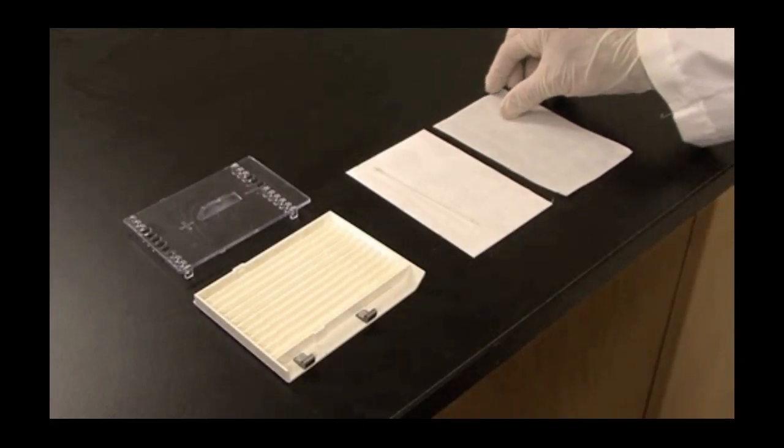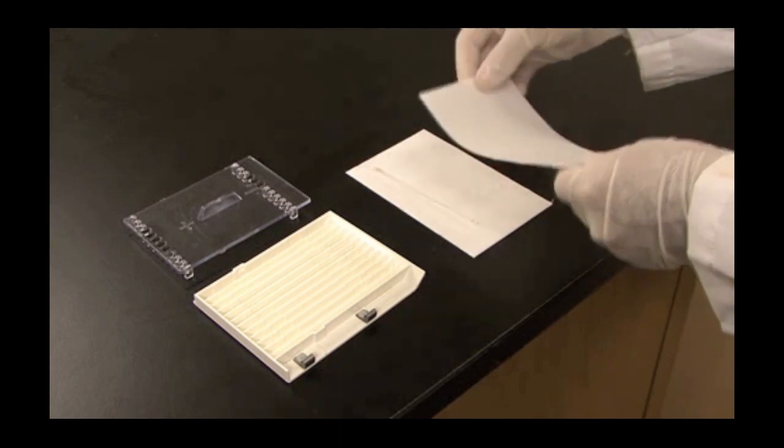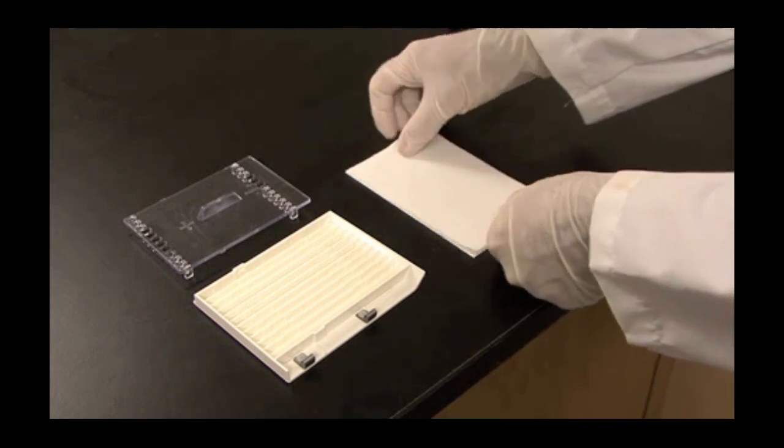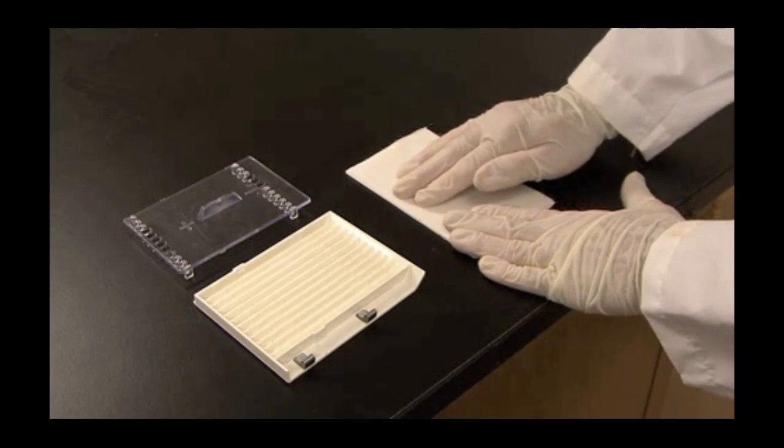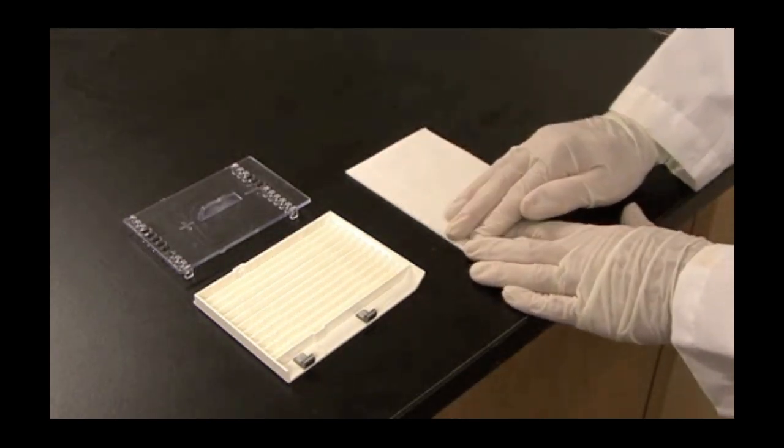Wet another piece of filter paper and place the wet filter paper onto the IPG strip and gently blot the excess mineral oil off the strip. Be careful not to press too hard to damage the IPG strip gel.